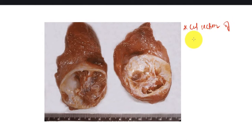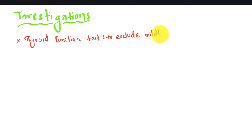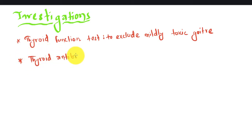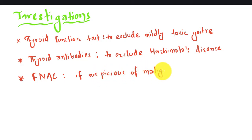Here you can see the cut section of a simple nodular goiter showing cysts. Talking about investigations: thyroid function tests can be performed to exclude mildly toxic goiter; thyroid antibodies can be performed to exclude Hashimoto's disease; and FNAC can be performed to exclude malignancy.